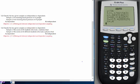Classify the two given samples as independent or dependent. Sample 1: pre-training blood pressure of 15 people and post-training blood pressure of the same 15 people. If it is the same person before and after, the samples are dependent. Choose A for this one.